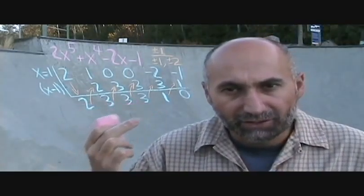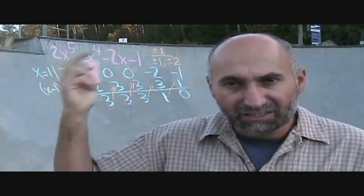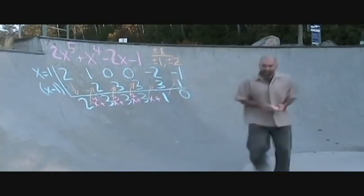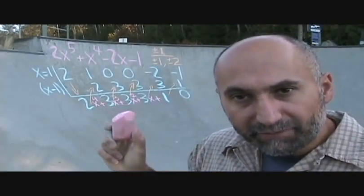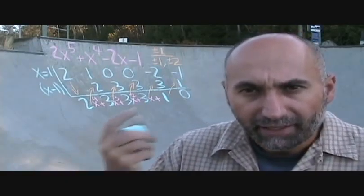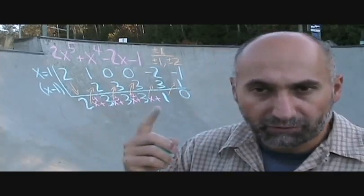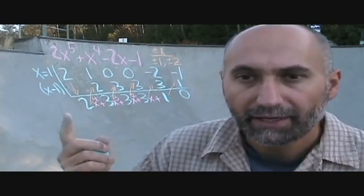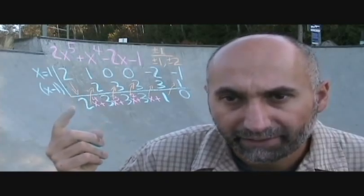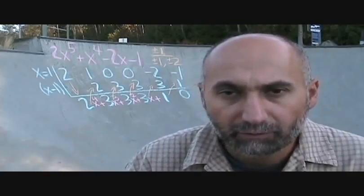Now we need to factor the quotient using synthetic division again. The possible factors of this new polynomial work out the same way, and it becomes 2x to the power of 4 plus 3x cubed plus 3x squared plus 3x plus 1 — no missing terms. Possible factors are plus or minus 1 divided by plus or minus 1 or plus or minus 2. Let's try x equals positive 1 again.